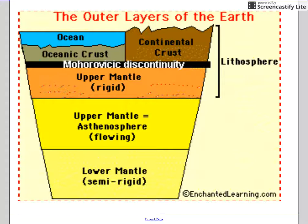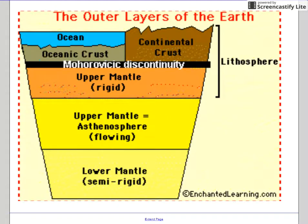In the outer layers of the Earth we have the lithosphere and asthenosphere. The lithosphere contains the continental and oceanic crust and the upper mantle, which is very rigid. Also in the upper mantle we have the asthenosphere, where rock is flowing — and that is where our convection currents are located.